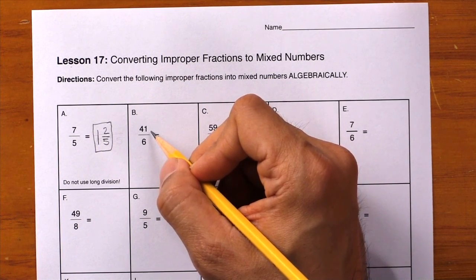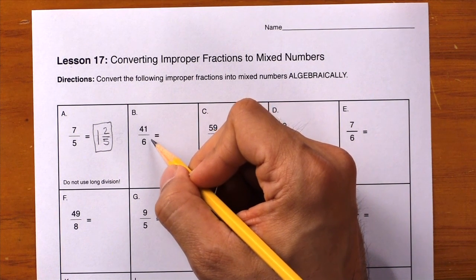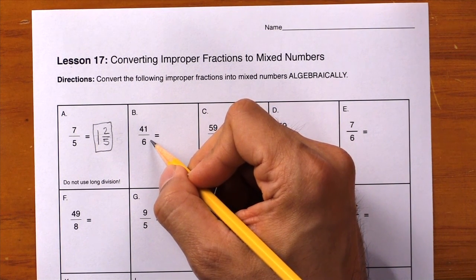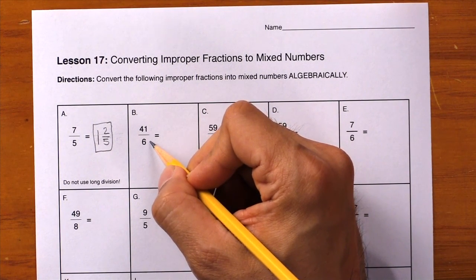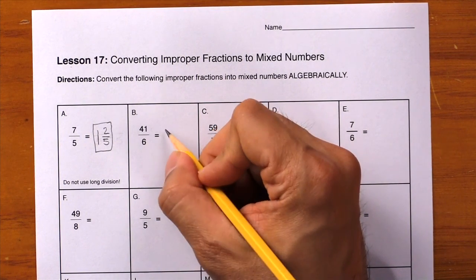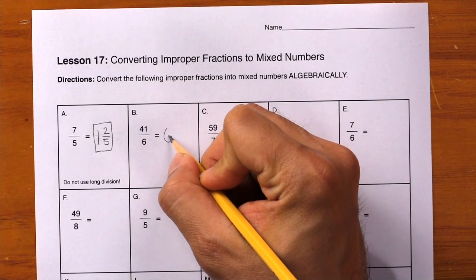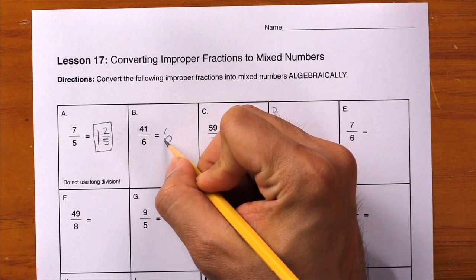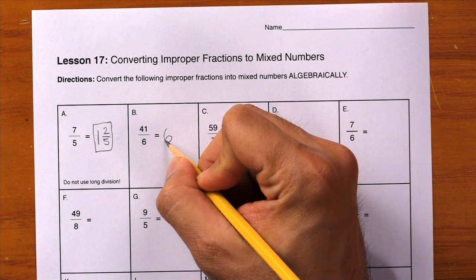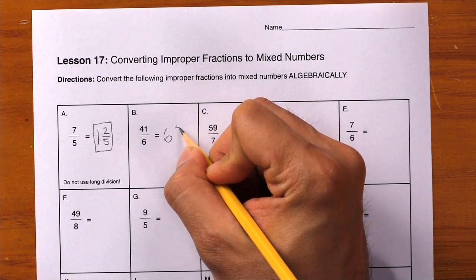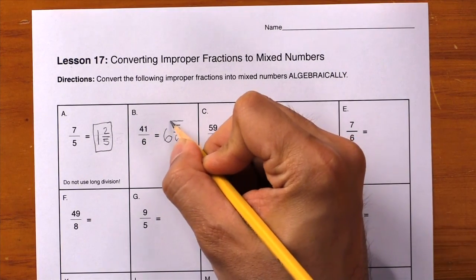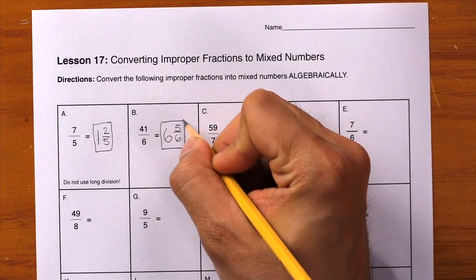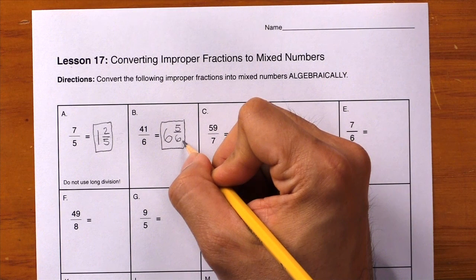But I know 36 divided by 6 will work, so let's use that. What is 36 divided by 6? That'll give me 6, so write it down nice and big as our whole number. How much will you have left over? I know that I'll have 5 sixths left over, so I'll write it down and box your final answer of 6 and 5 sixths.